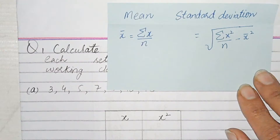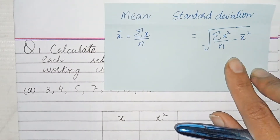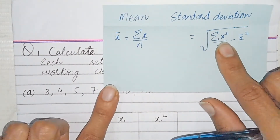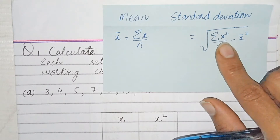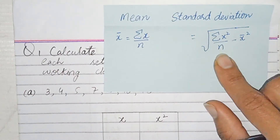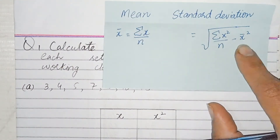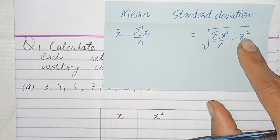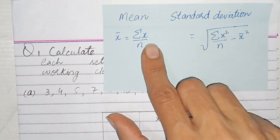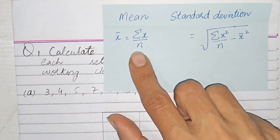In this exercise we have to find the standard deviation. This is the formula for standard deviation. X is the value of the data which are provided to us, sigma is the sum of these values, n is the total number of values, and x-bar is the mean. The mean has a specific formula which is the sum of all the data values over the total number of values.